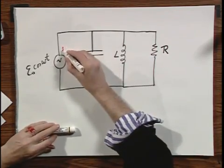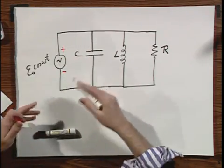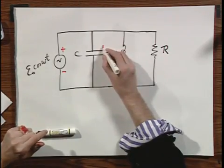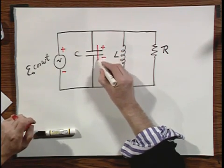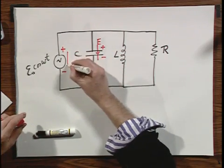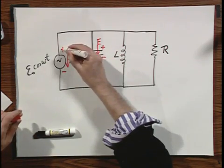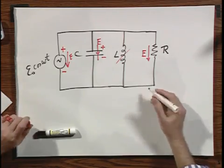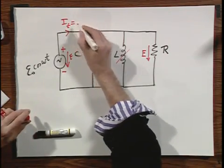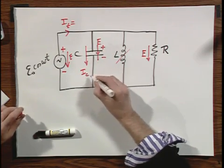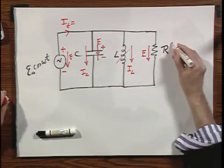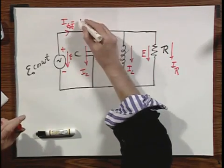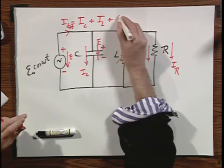I have here a driving voltage source, E₀ cos(ωt). Here a capacitor C, here a self-inductance L, and here a resistance R. Very different from the circuits we have seen before, because they are not in series but in parallel. I always, when I solve these problems, take note that this side is plus and this is minus, and I make the assumption that there are no charges anywhere on the capacitor.